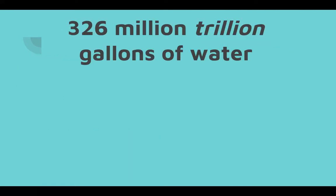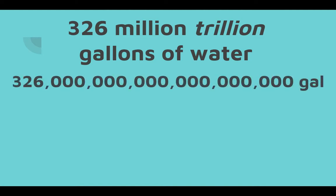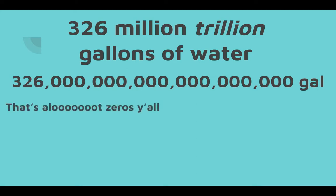There are 326 million trillion gallons of water on Earth. To help visualize that, I'll show you what that looks like in numerical form — it's a lot of zeros.